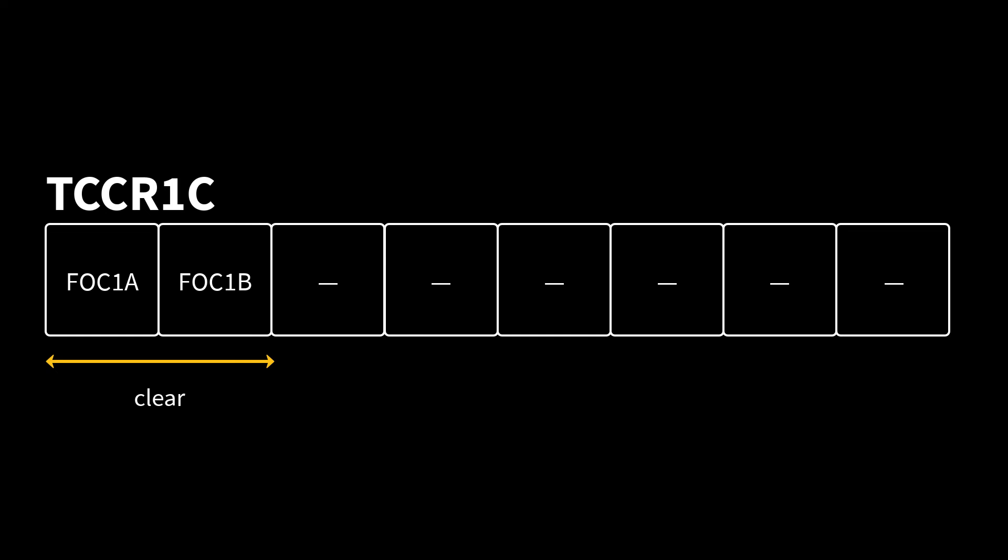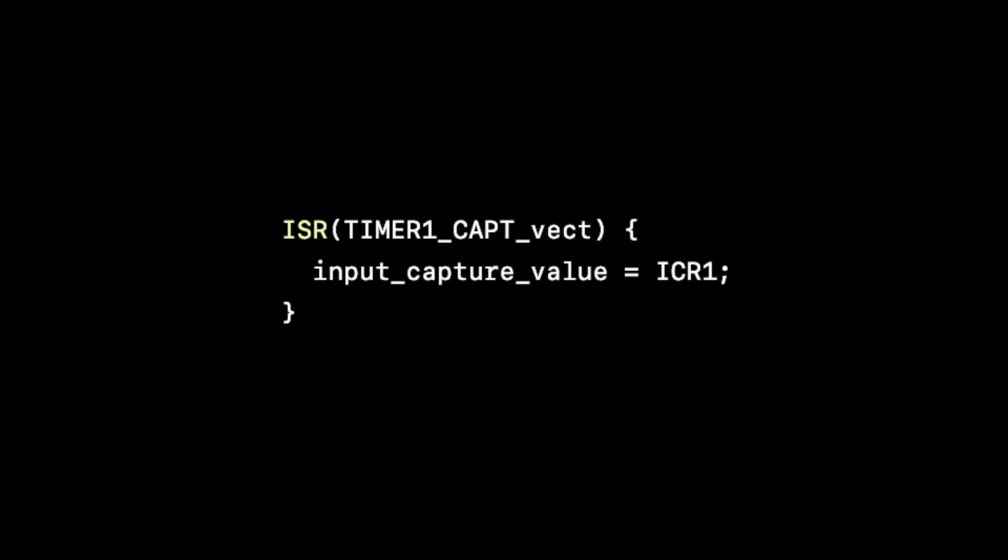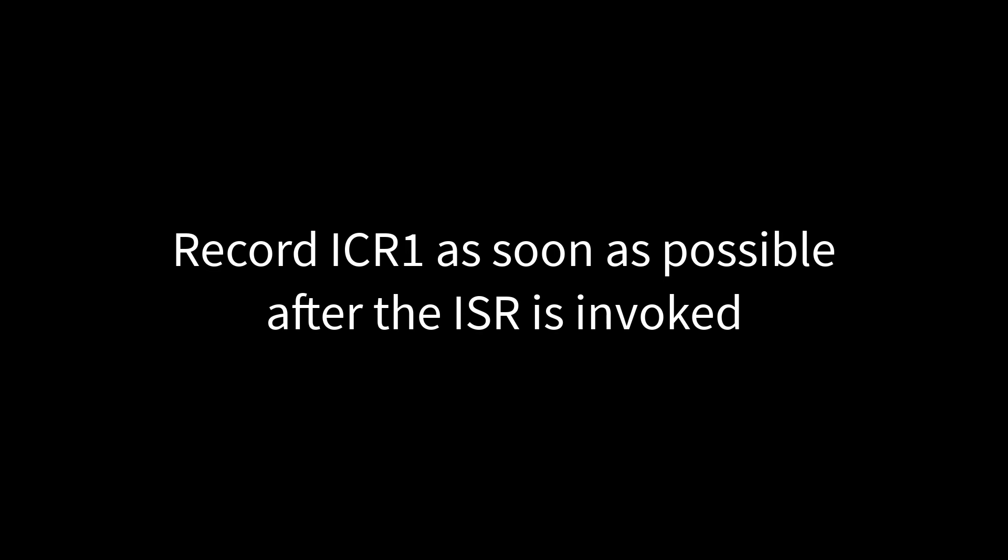We will not be using force compares on timer counter 1 so we can ignore TCCR1C. In order to use the input capture interrupt, we will need to set the input capture interrupt enable bit in TIMSK1. The interrupt is where we can store the value recorded in the ICR1 register. Because timing is critical, particularly when we have an input wave with a fast period, we need to make sure we record the value in ICR1 as soon as the input capture interrupt is invoked. If we need to change our trigger condition, we need to make sure that happens immediately thereafter in order to be sure we can capture the next trigger event.